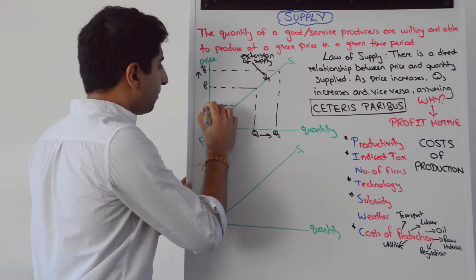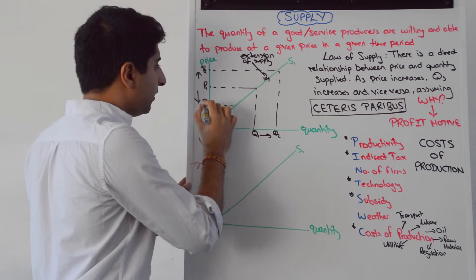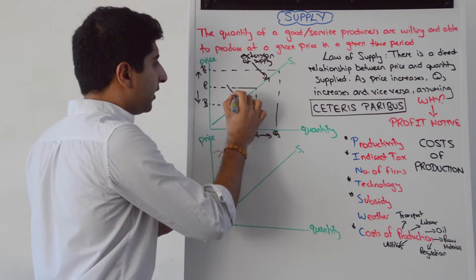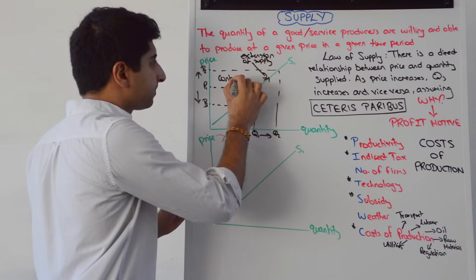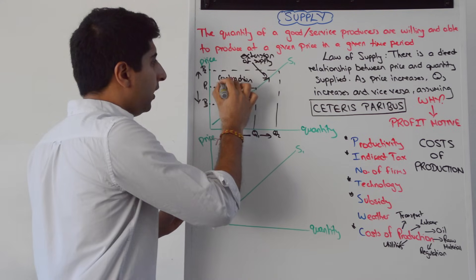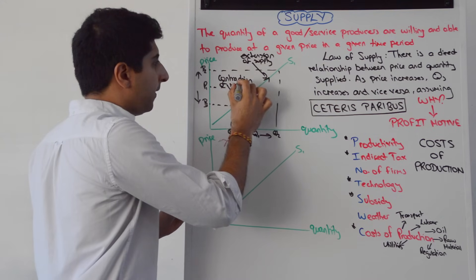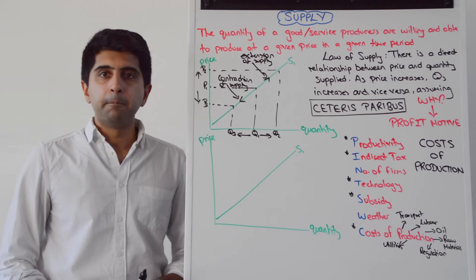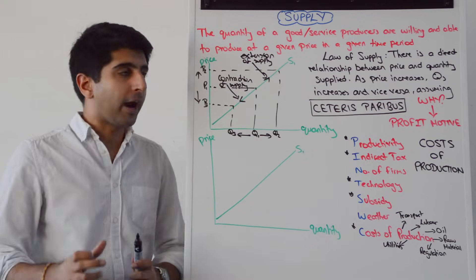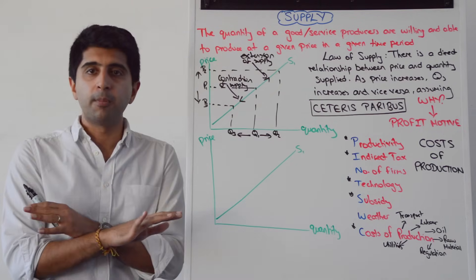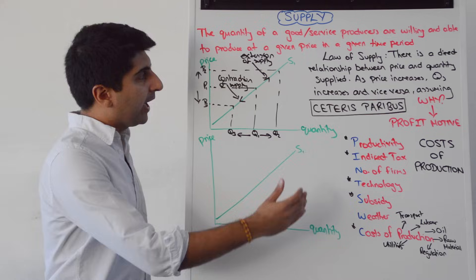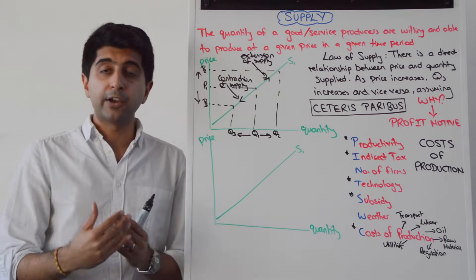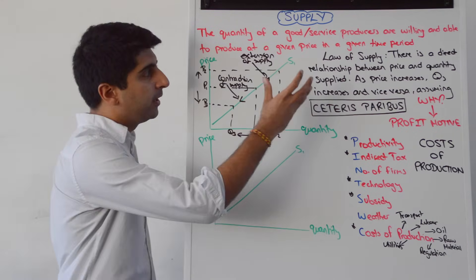Whereas when the price decreases from P1 to P3, there is a reduction in supply — the technical term is a contraction of supply. Very importantly, to isolate this relationship we assume ceteris paribus: we let all other factors remain unchanged, remain equal. That allows us to come up with this isolated relationship between price and quantity supplied — the law of supply.